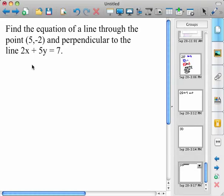So here's the cookbook approach of doing it. So first thing, we're going to find the slope of that bottom line. That 2x + 5y = 7.